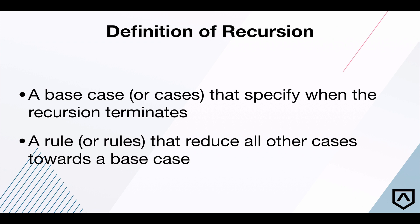The second very important thing we need in any recursive code is a rule — or rules — that reduce all other cases towards a base case. In simpler terms: if we're not at the base case, here's a rule for how we actually get there. If we follow that rule recursively over and over, we eventually have to reach the base case in order to write correct recursive code.